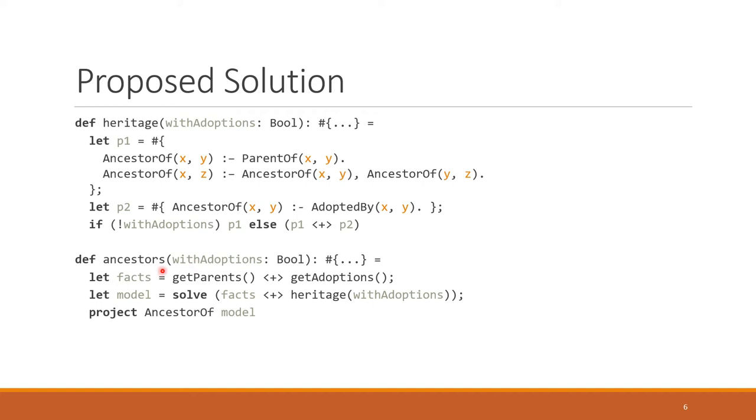Now down here in this function, I also take a boolean. I call some functions to get all the parent facts from somewhere, maybe from a file, whatever, the same for the adoptions. And then I'm going to take the facts, I'm going to compose them with the result of calling this heritage function, which will give me one of the two versions of the program. I'm going to solve that to compute its minimal model, and then I'm going to project out all the ancestor of facts. So in this way, I have now using a functional program with embedded Datalog, been able to model both programs and have them in one program at the same time.